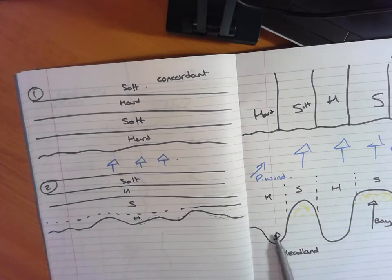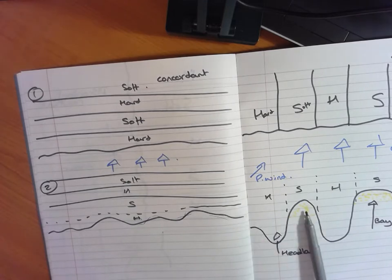And if you have alternating bands on a discordant coastline where you're going to find significant features: headlands, caves, arches, stacks, stumps, depositional landforms such as beaches within bays.